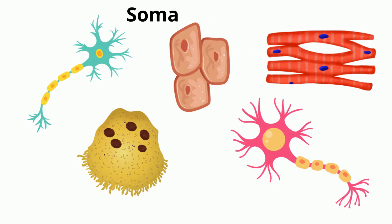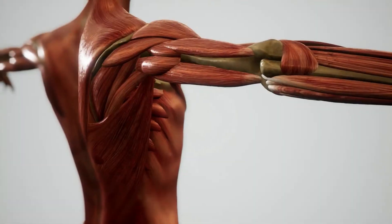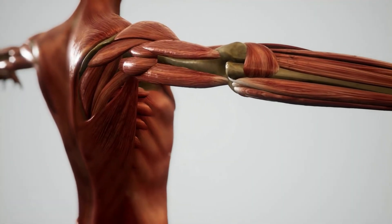Somatic cells come in a huge variety. There are over 200 types of somatic cells with different functions, such as bone, muscle, and nerve cells.